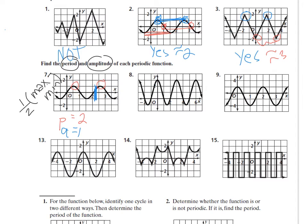This one is periodic. The period goes from zero to three, so it's three. Going from here to here is three units, and from here to here is three units — there are all different ways to find the period. The amplitude is half of the height. Here you're going from negative one to three, so that's four units, and half of that is two.